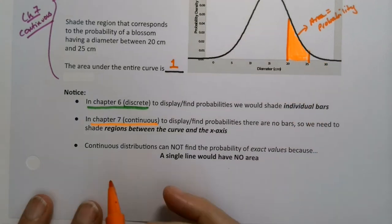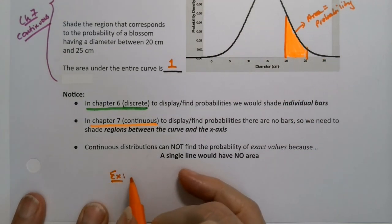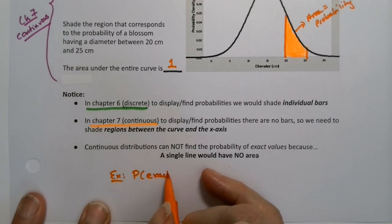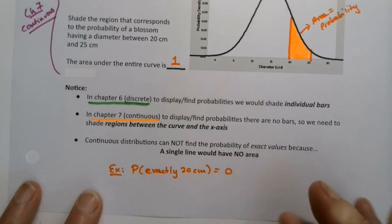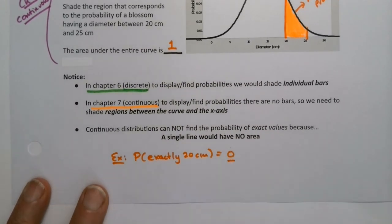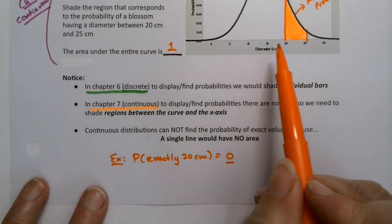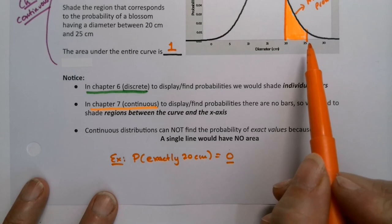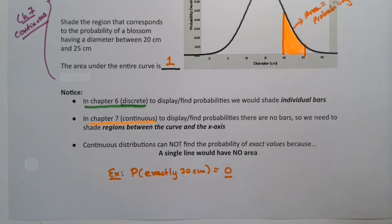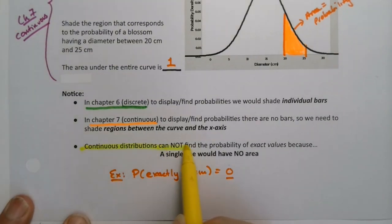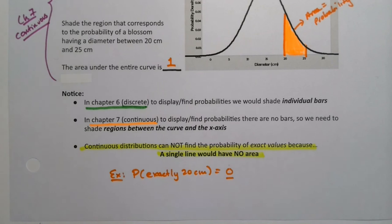The probability of exactly 20 centimeters for that rose is zero. The probability of any exact measurement on its own is zero, because the vertical line has no area. And we said that the area has to be the probability. That's kind of a sneaky thing to notice, and that's true of continuous distributions, but it's not true in discrete probability distributions.